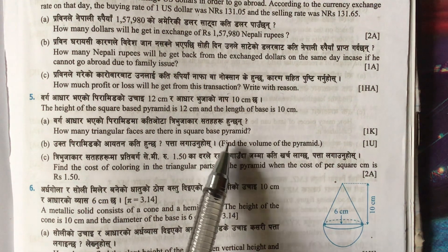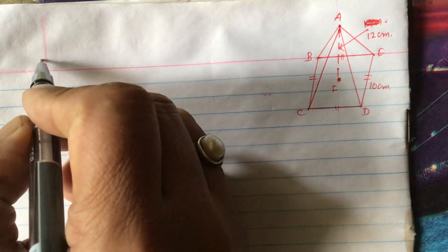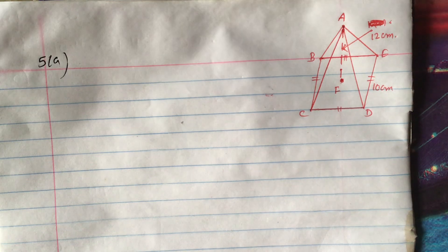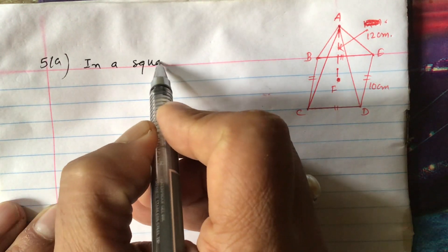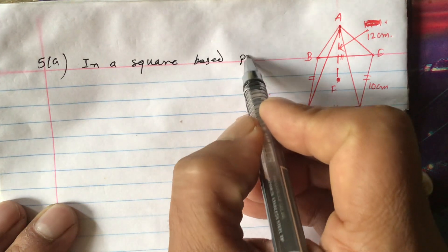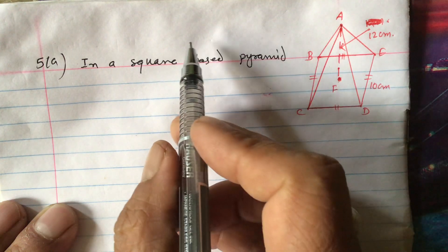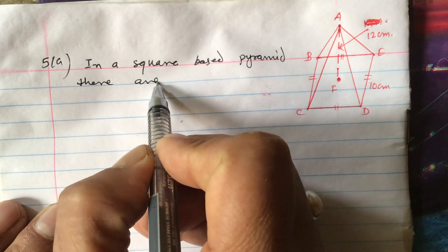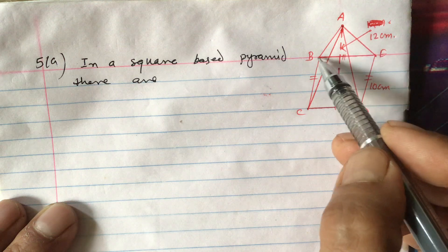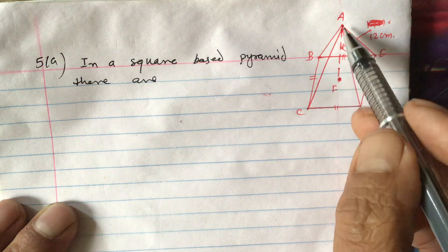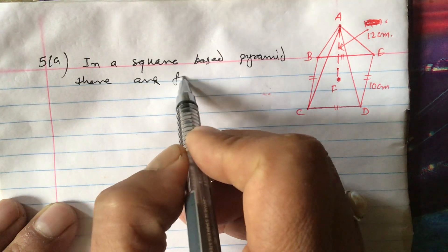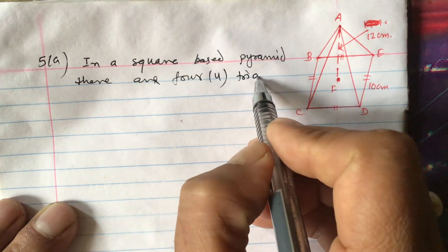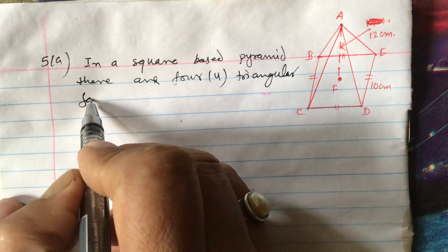First, let us look at the figure for this question — this is the figure for question 5a. In a square based pyramid, there are four triangular faces. The first is ABE, the second is ABC, the third is ACD, and the fourth is ADE. So altogether there are four triangular faces.